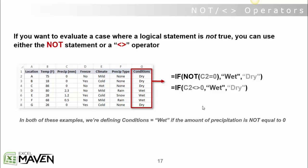The not-equal-to sign just looks like a less-than followed immediately by a greater-than symbol. So I can do the exact same thing by writing if C2 is not equal to 0, value of true wet, value of false dry. It's just a little bit cleaner, syntax is more straightforward, easy to comprehend, and you don't introduce these extra parentheses that you would by using the NOT statement.